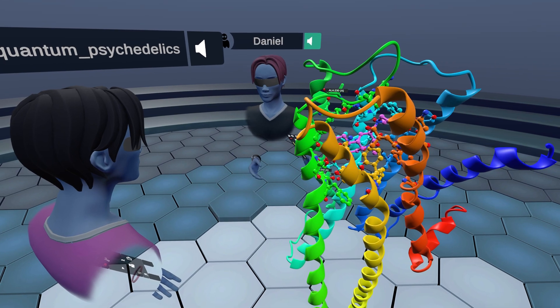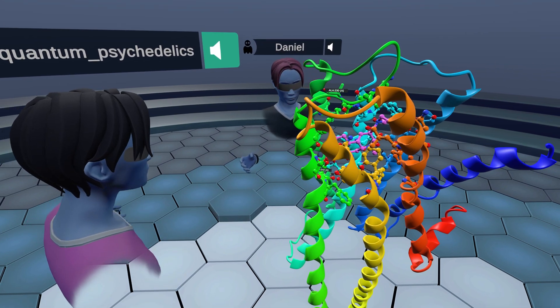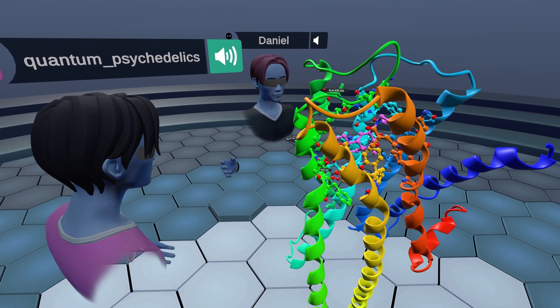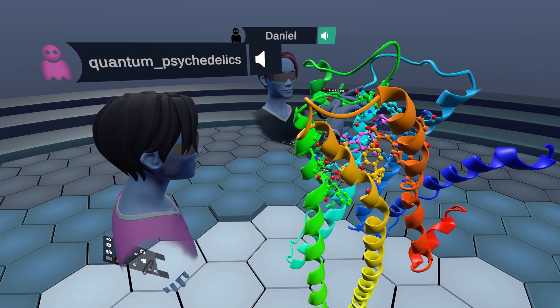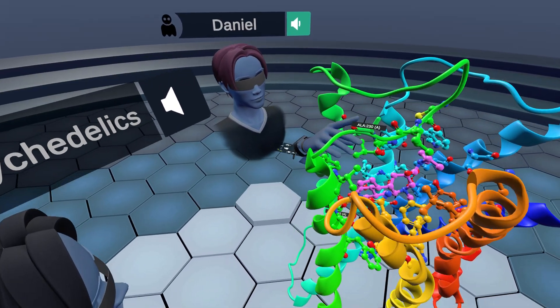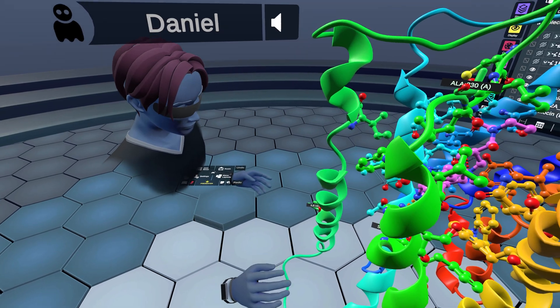Which blew our minds because it's right near the orthosteric binding site. Right. It's supposed to make an effect when it mutates, but it doesn't really.